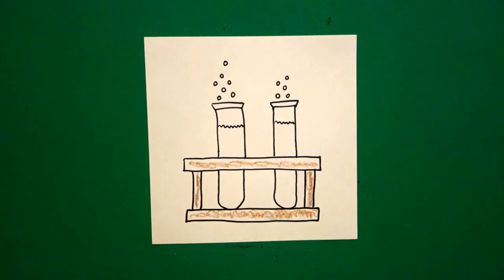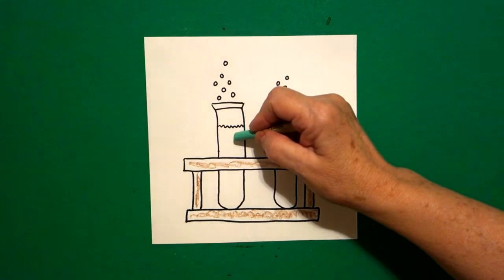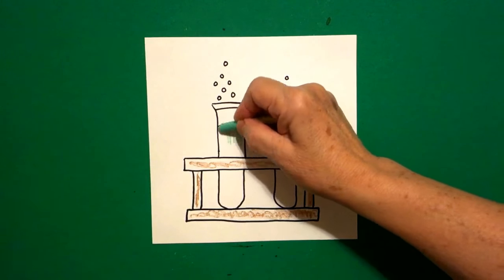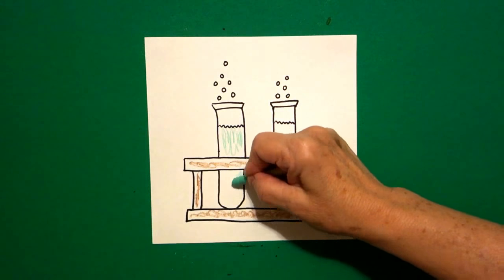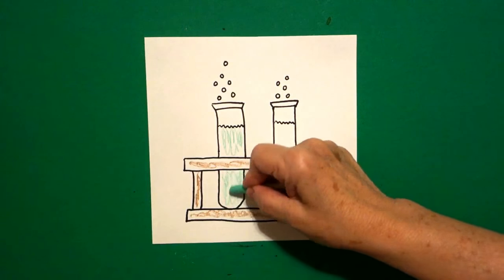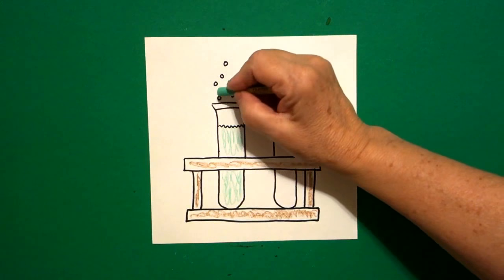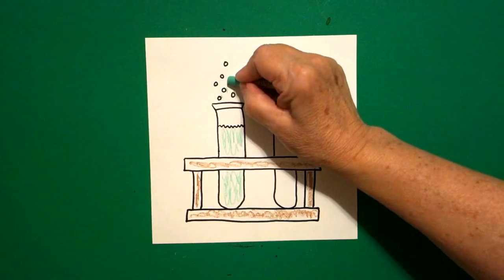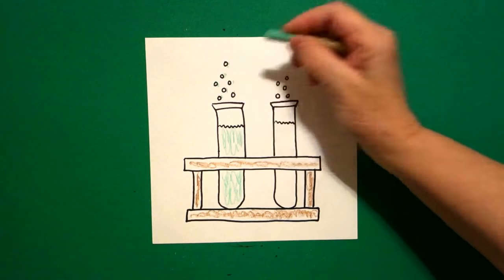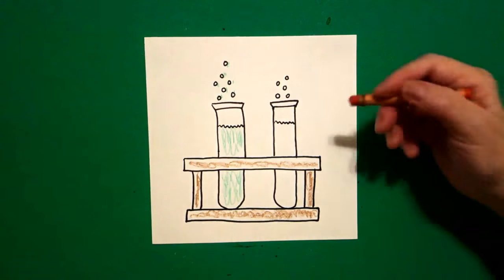Then I get to make a choice, whatever I have in my test tubes I can choose whatever color I want. But on this one on the left I decided to go with green and color in your little dots green.